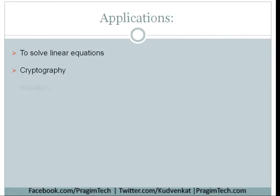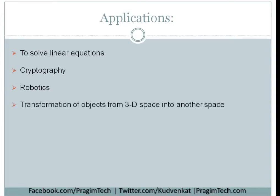Matrices are used in robotics and automobiles to give motion to robots — transformation of objects from 3D space into another space to give realistic motion to objects. Matrices are also used in statistics to represent collected data and population.